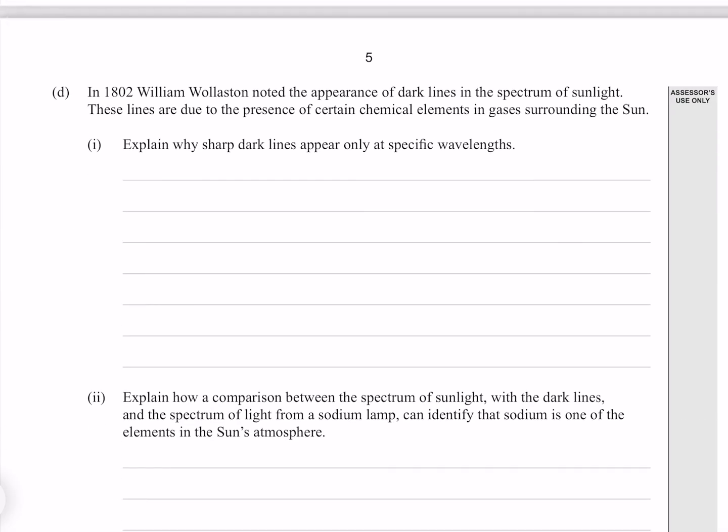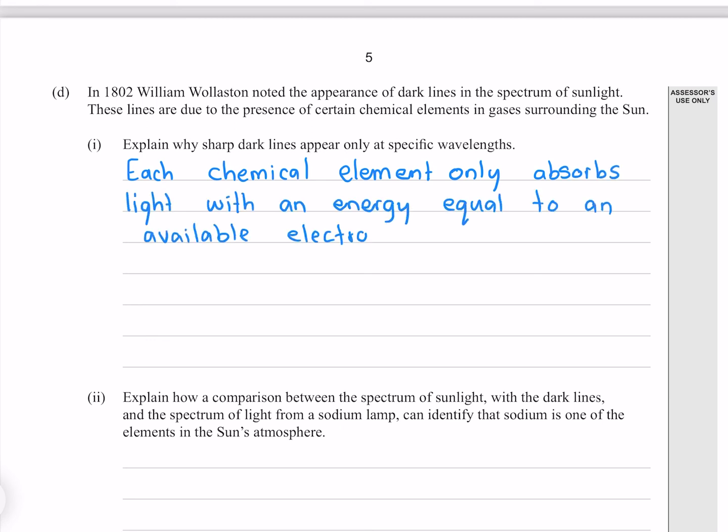In 1802, William Wollaston noted the appearance of dark lines in the spectrum of sunlight. These lines are due to the presence of certain chemical elements in gases surrounding the sun. Explain why sharp dark lines appear only at specific wavelengths. Each chemical element only absorbs light with an energy equal to an available electron transition. The electrons absorb this energy and move to a higher energy level.